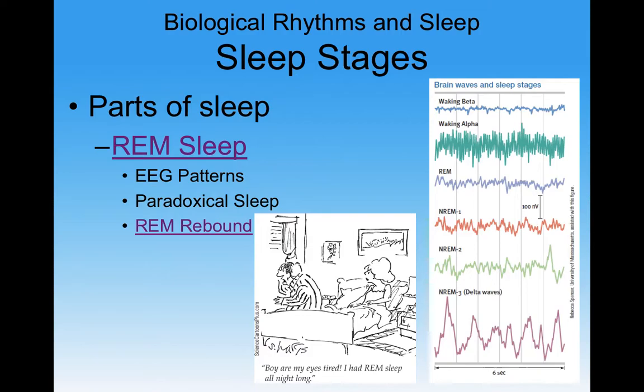Once you get to non-REM three, we're talking about our first 90 minutes of sleep. We go down from having our waking alpha waves, fall asleep into non-REM one, stay there for maybe 30 minutes or so, then go down to non-REM two, non-REM three, and then we go to REM.